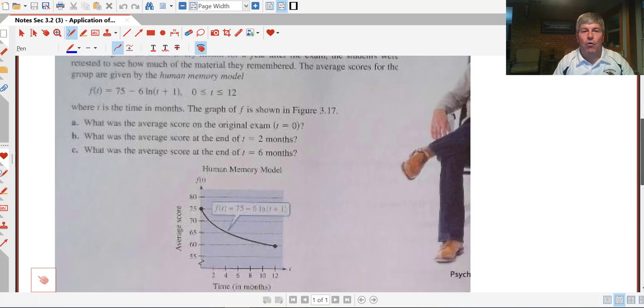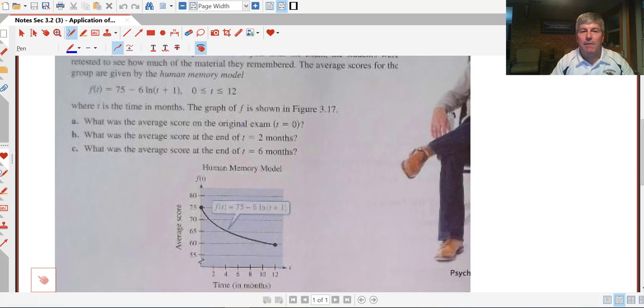What's the average score on the original exam? The original exam, right away, time equals 0. And then they ask us to do t equals 2 months and t equals 6 months.